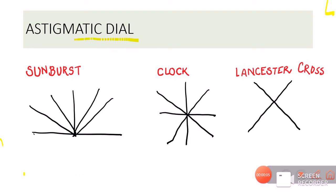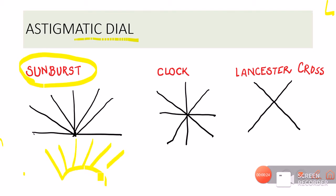Before the fourth and fifth concepts, let me briefly explain what the astigmatic dial is. The astigmatic dial is a test chart consisting of radially arranged lines. These can be arranged as a sunburst pattern — with six lines at 30 degrees apart from each other — or arranged like clock hands, or just two lines at 90 degrees to each other, which is called a Lancaster cross.